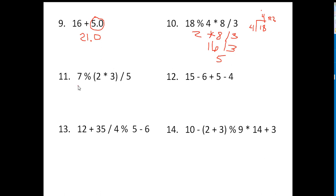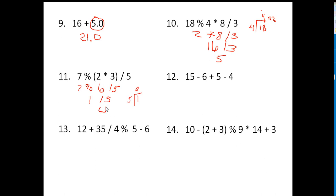Number 11: you do the parentheses first, so it's going to be 7 modulus 6 divided by 5. Going left to right, 7 modulus 6 — well, 6 goes into 7 once and has 1 left over, so the answer is 1, then divided by 5. 5 goes into 1 zero times, and since an int divided by an int is an int, the answer is 0.